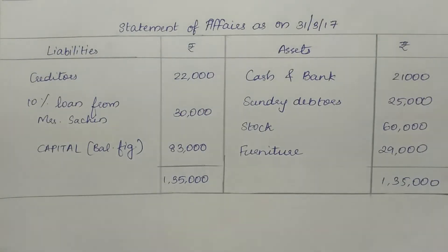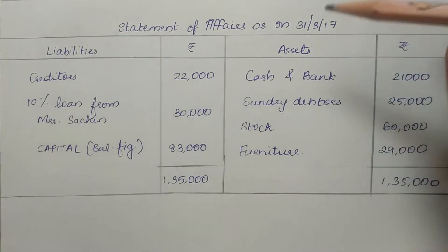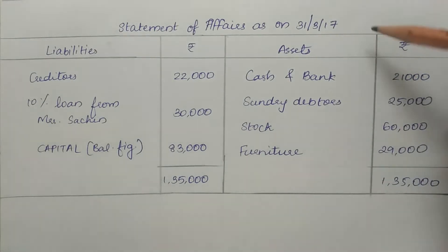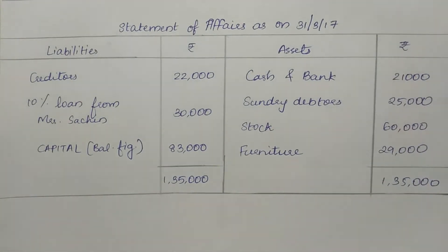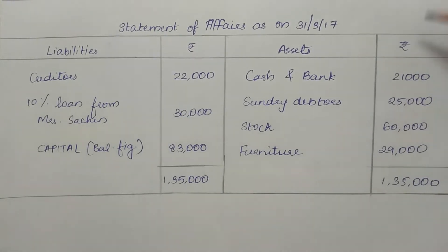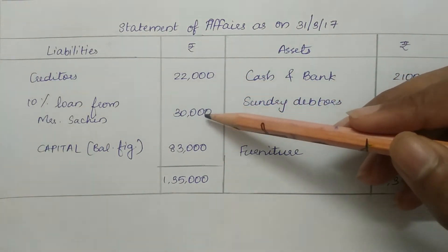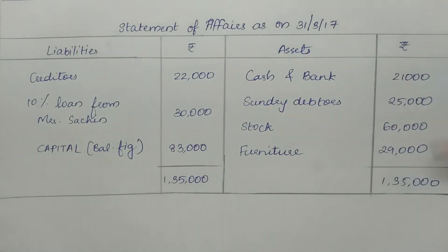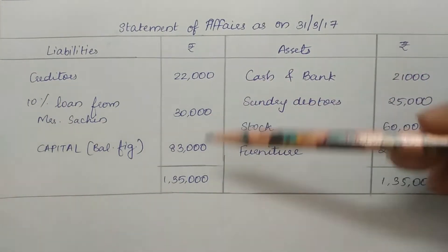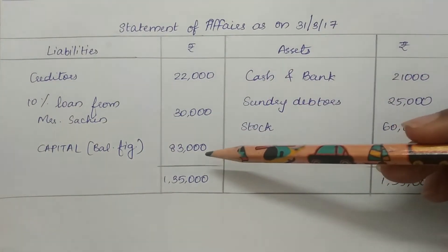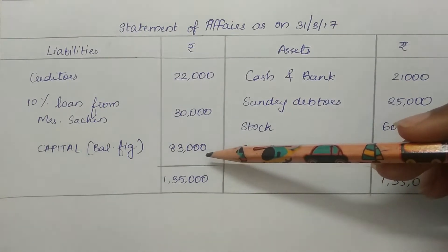For the closing Statement of Affairs dated 31-3-2017: cash and bank 21,000; sundry debtors 25,000; stock 60,000; furniture 29,000; creditors 22,000; loan 30,000. The closing capital as the balancing figure comes to 83,000.